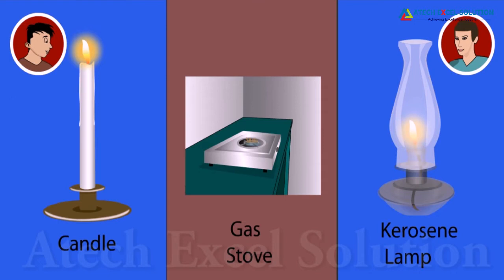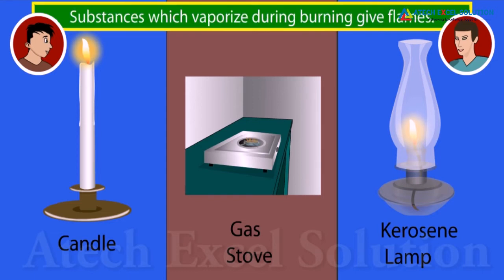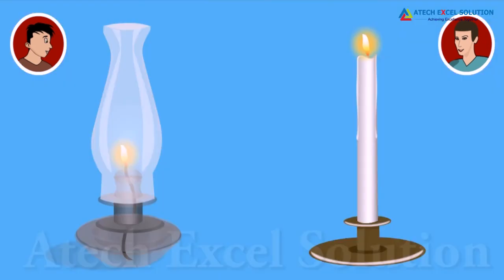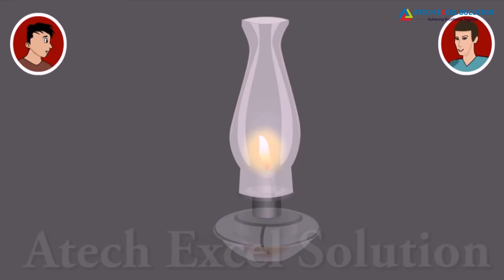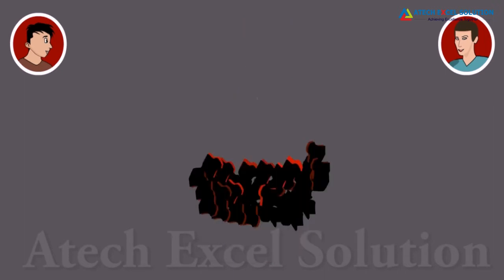Materials like candle, gas stove, and kerosene lamp give a flame while burning. Why is this so? Substances which vaporize during burning give flames. For example, kerosene oil and molten wax rise through the wick and are vaporized during burning and form flames. Charcoal, on the other hand, does not vaporize, and so it does not produce a flame.